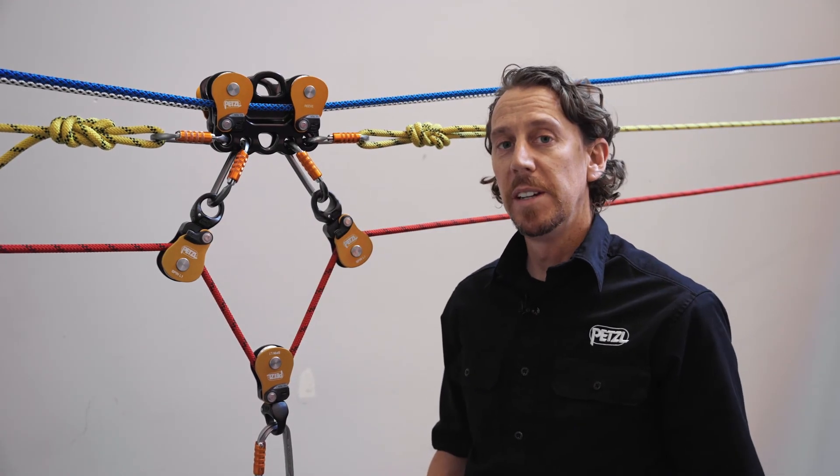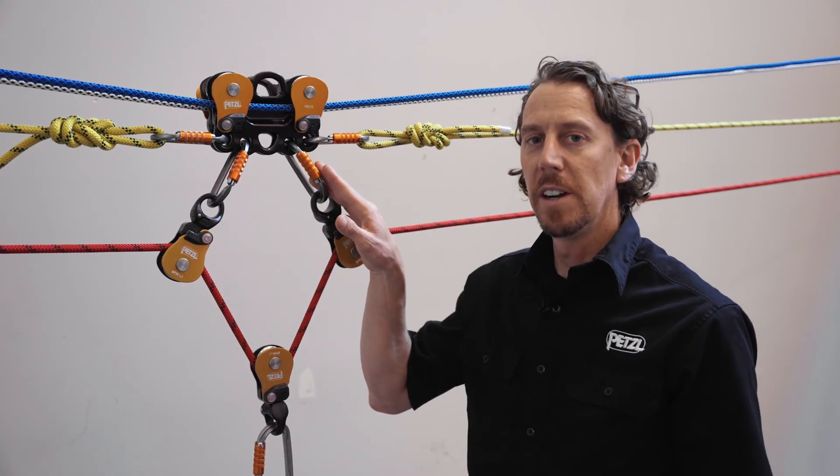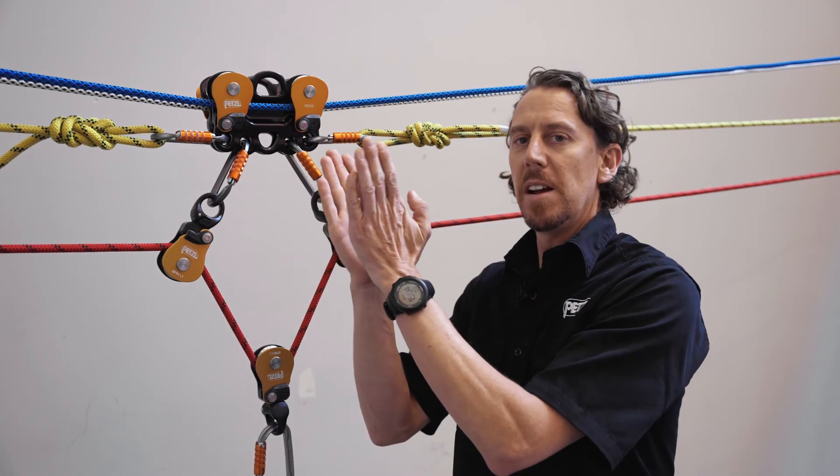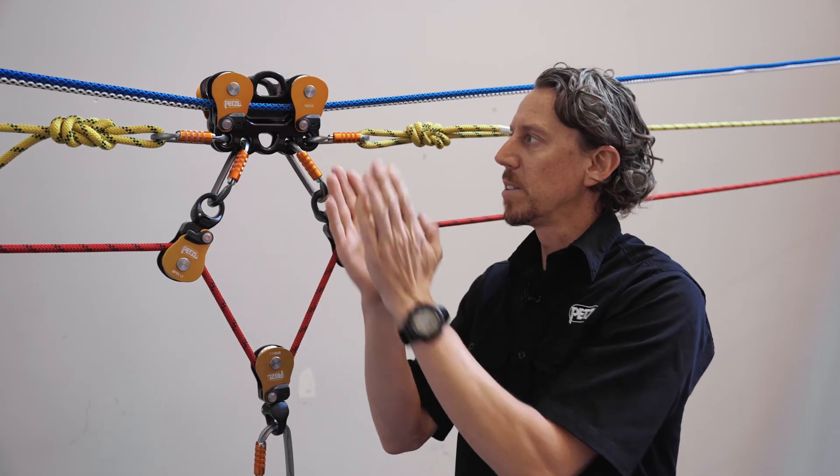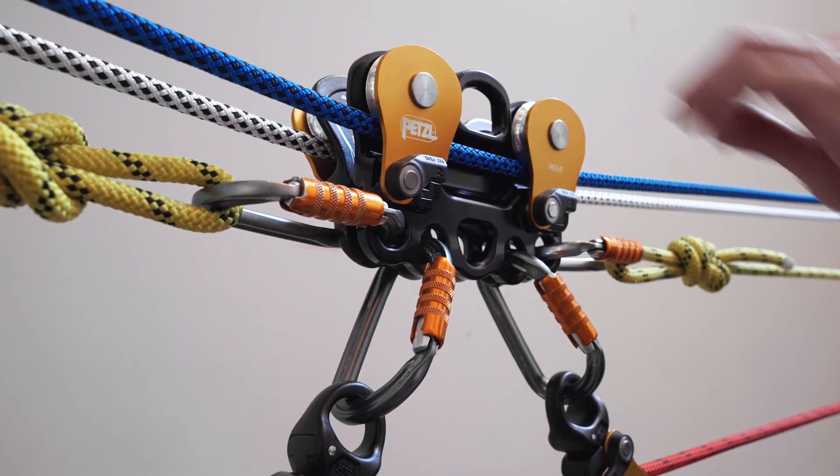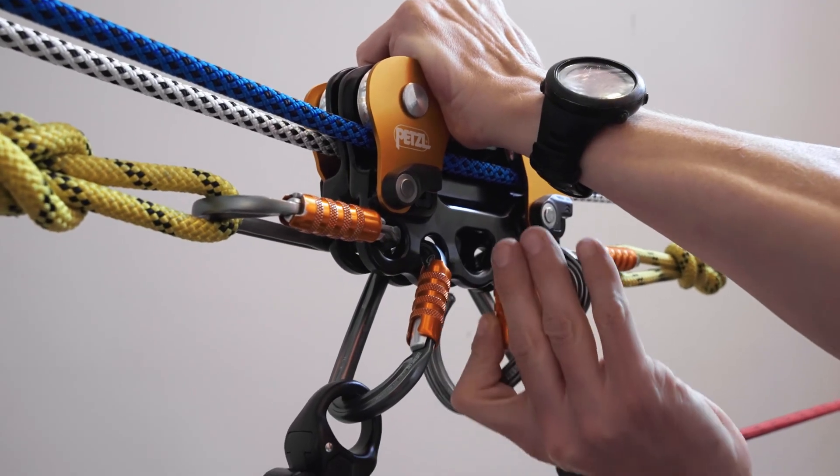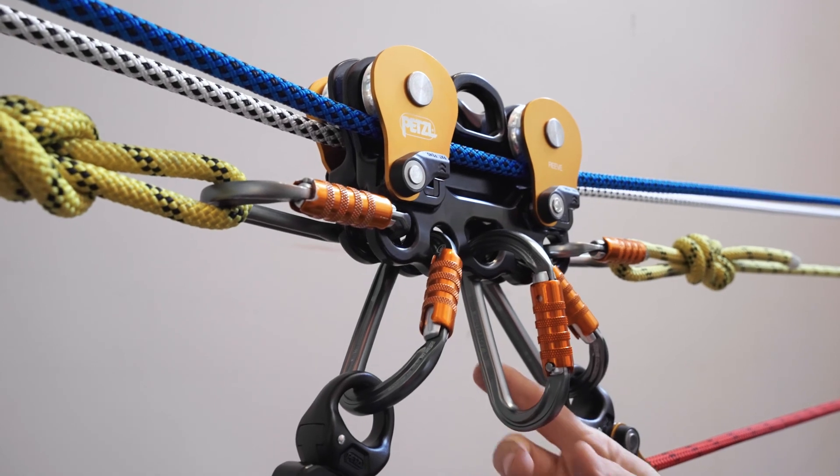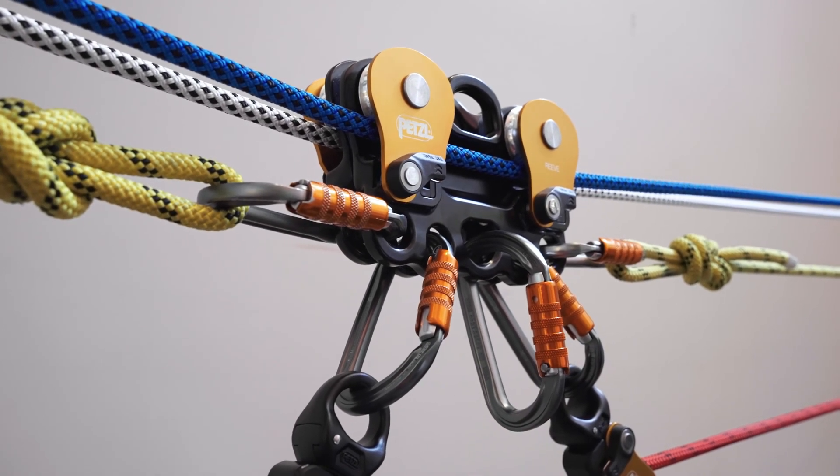Option number three uses this exact same configuration except where we notice that the pulleys may not sit parallel and can tilt slightly outward. To fix this, we can use a carabiner clipped to the central attachment point of one of the Reeves. This will help create a block between the two Reeves.